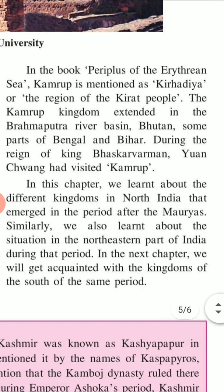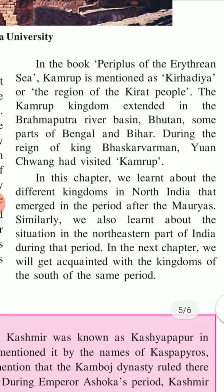In ancient texts, Kamrupa is mentioned as the region of the Kirata people. The Kamrupa kingdom extended across the Brahmaputra river basin, Bhutan, and some parts of Bengal. The Chinese traveller Xuanzang visited Kamrupa during his travels in India.